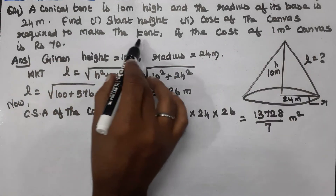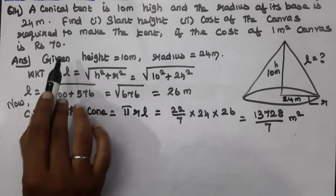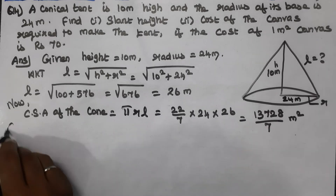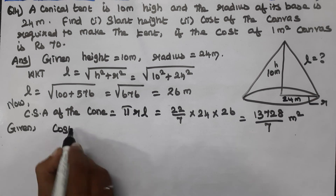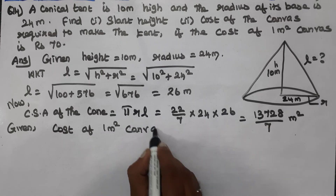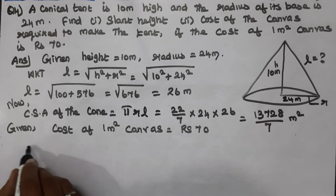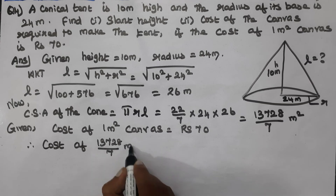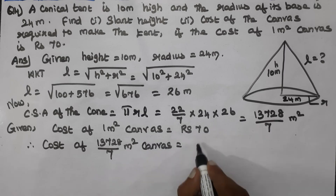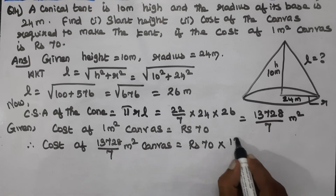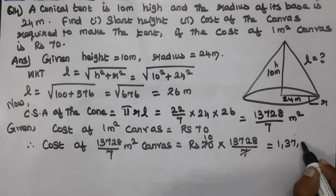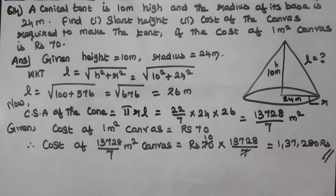Cost of canvas required to make the tent: if the cost of 1 metre square is ₹70, and the area is 13,728 divided by 7 metres square, then the cost equals 70 multiplied by 13,728 divided by 7. The 7s cancel, giving us 70 times 1,962, so the answer is ₹1,37,280. This is the final answer.